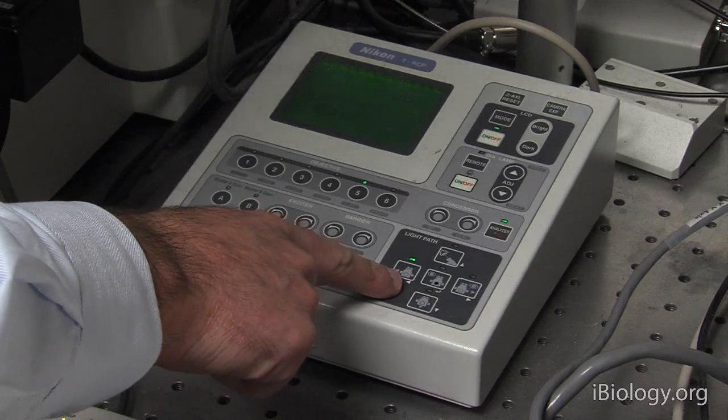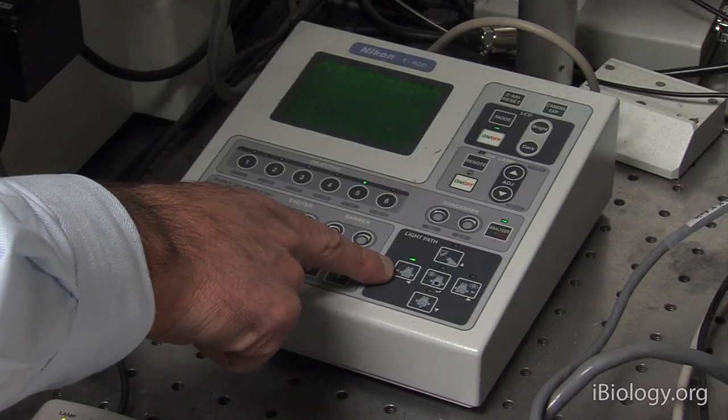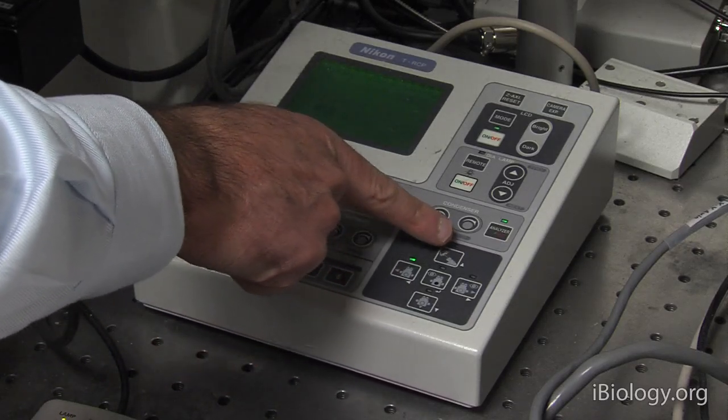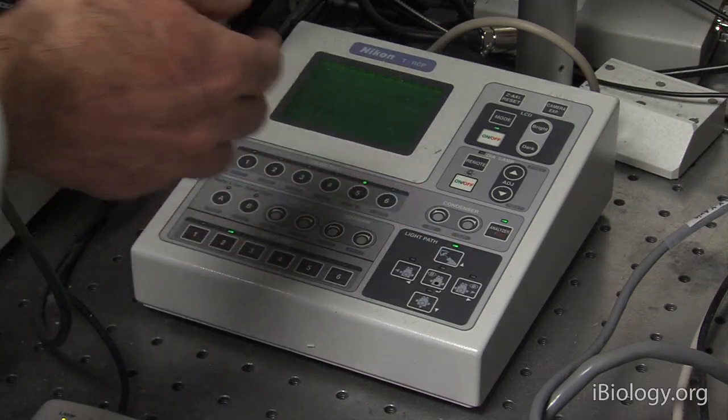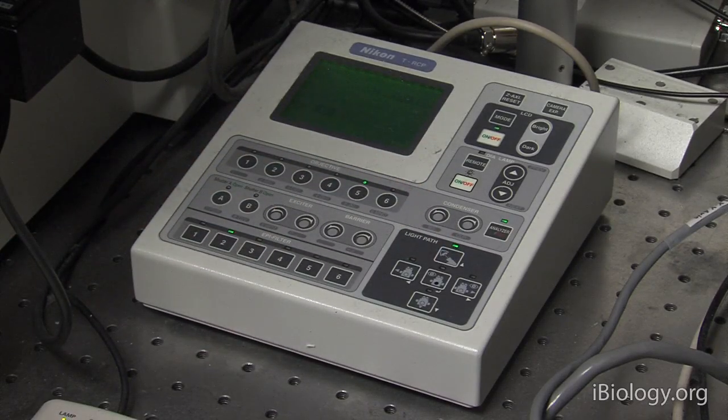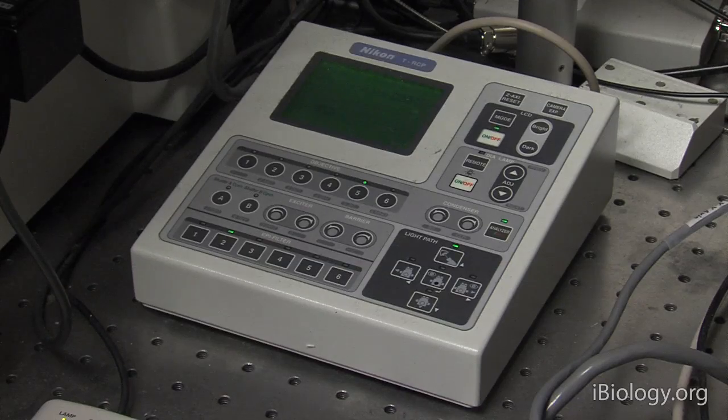In this case, actually, the light path is going to the camera, and so I need to switch it to the light path going to the eyepiece, and now I'm ready to start focusing and looking for fluorescence.